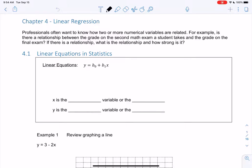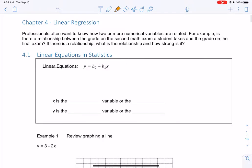All right, let's jump into chapter four, which is linear regression. This chapter will be a little bit different because we're going to look at two or more variables rather than one variable at a time. So professionals often want to know how two or more numerical variables are related, so they both have to be numerical. No categorical variables in this chapter.